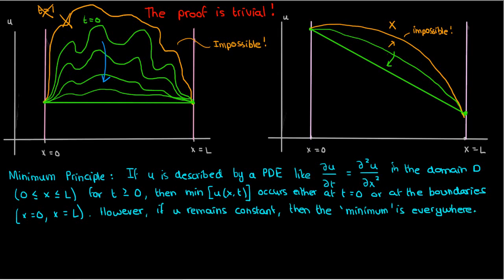We can show this minimum principle just by applying the maximum principle but now to negative u of xt, which would satisfy the same PDE as u.